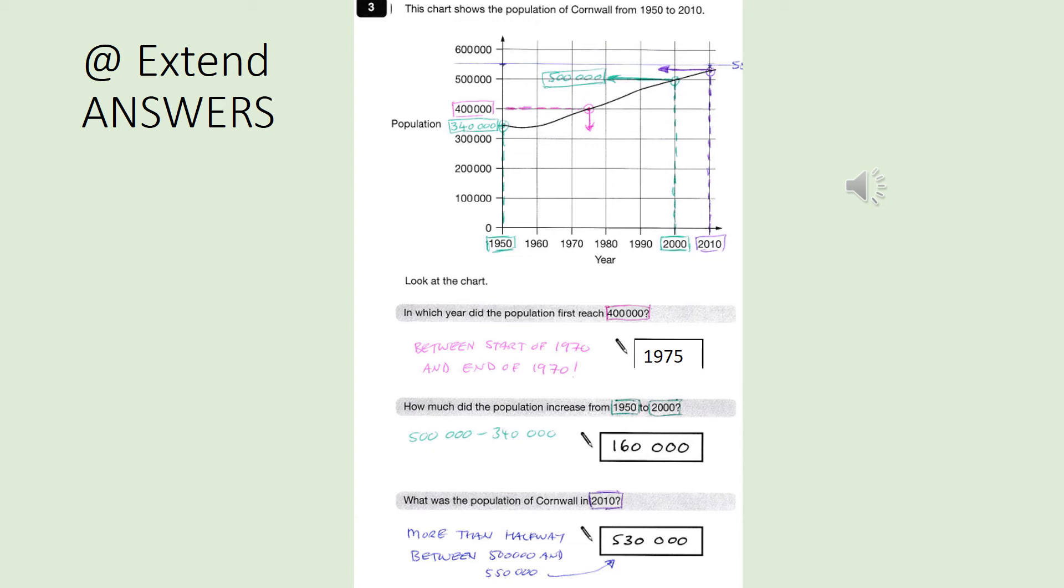Finally, what was the population of Cornwall in 2010? So that's in purple. And yeah, I think I agree here. I'd say it's about 530,000. Again, you might have gone 520,000, 525,000 around there. So hopefully you are fairly accurate with your answers.